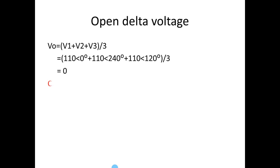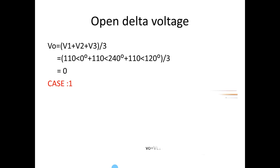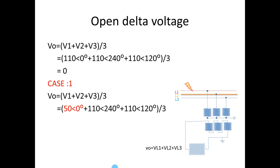Now we are going to see some case studies. Case 1: let us consider a fault on R phase. During this time, depending upon the fault current, the R phase voltage will be dropped. Let us consider the voltage on R phase is 50V, with remaining phases at 110V. The open delta voltage we get is 20V at 180 degrees.